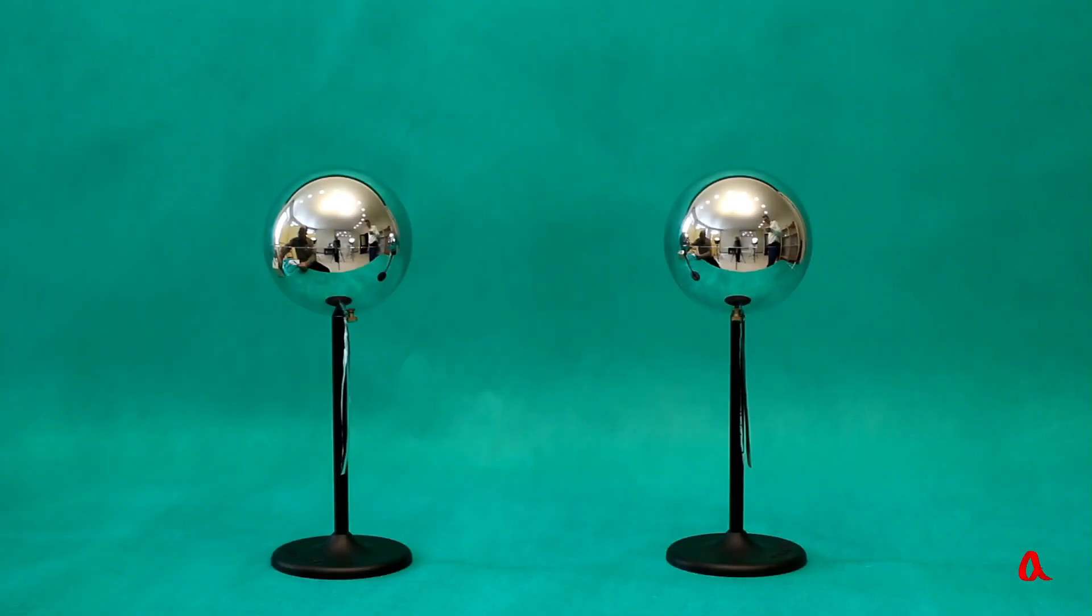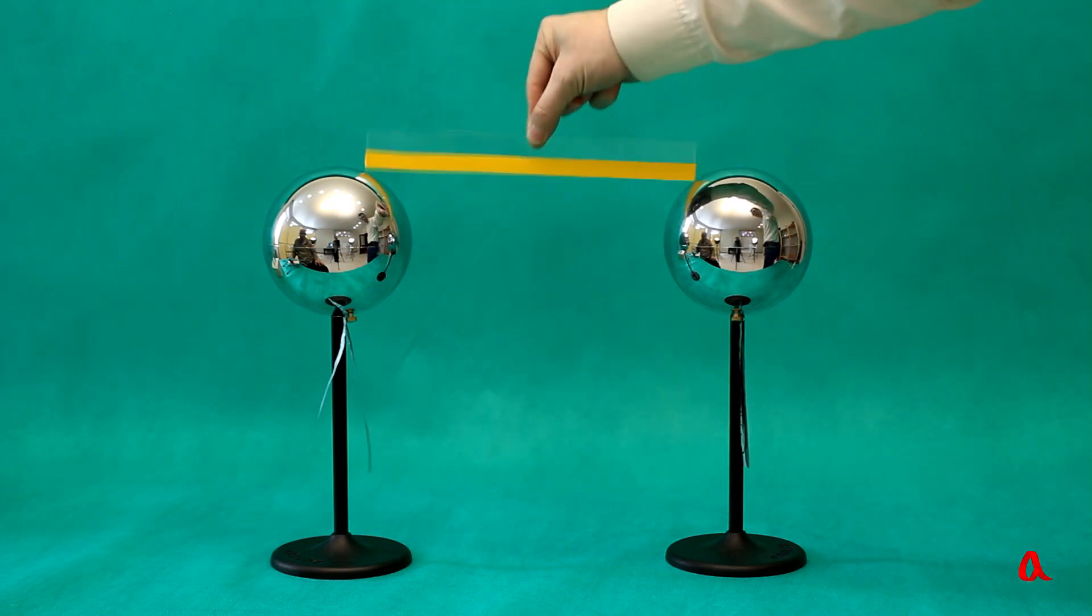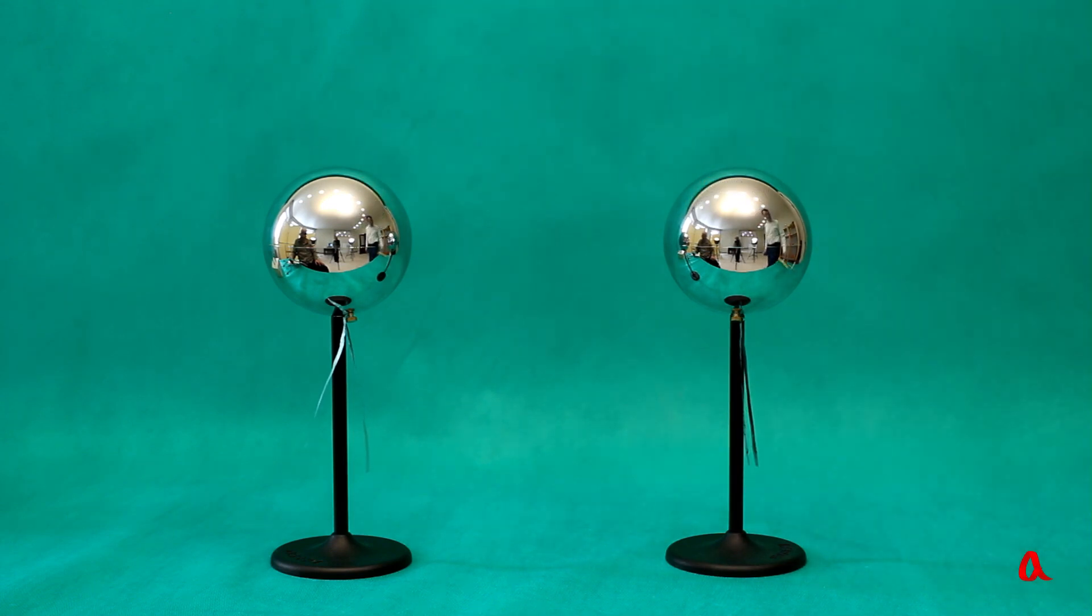We charge one of these metal balls from a high voltage power source and leave the other one uncharged. The foil lobes under the charged ball repel each other. We connect the balls with a plexiglass ruler. Nothing happens because plexiglass is an insulator and does not conduct electricity.